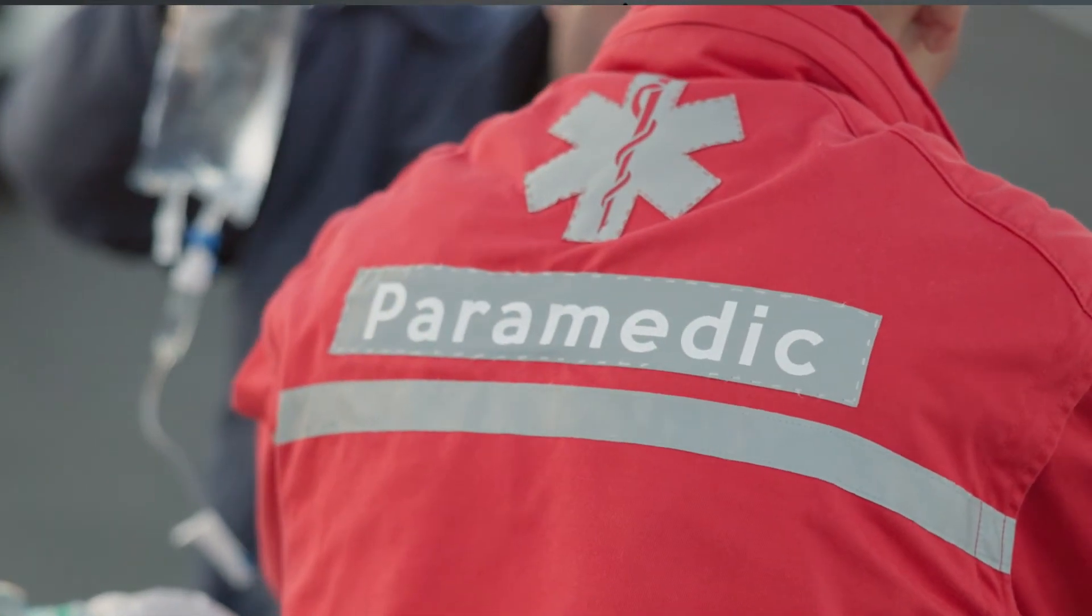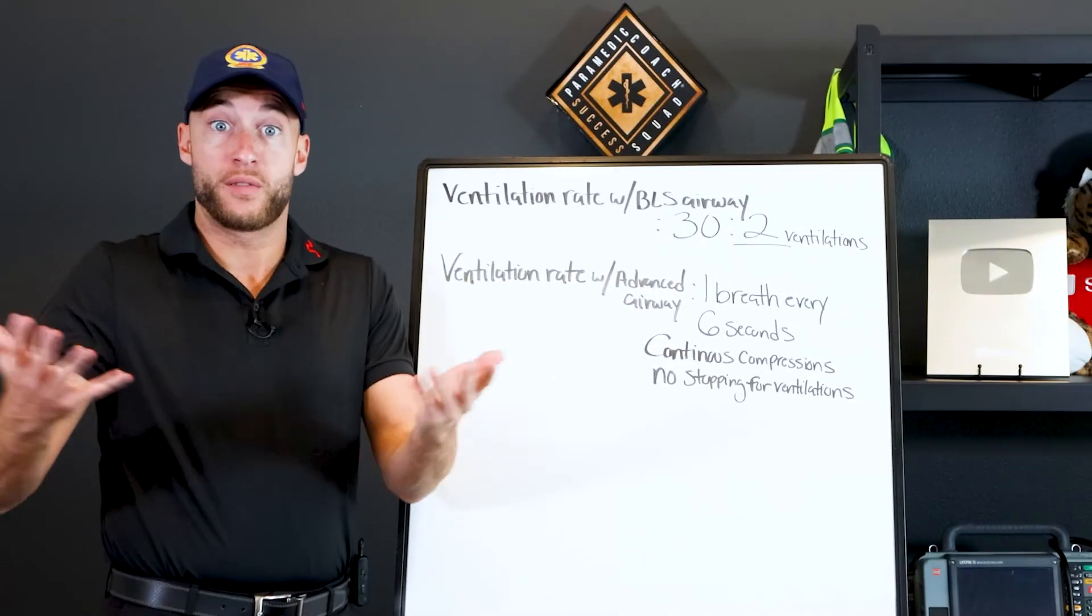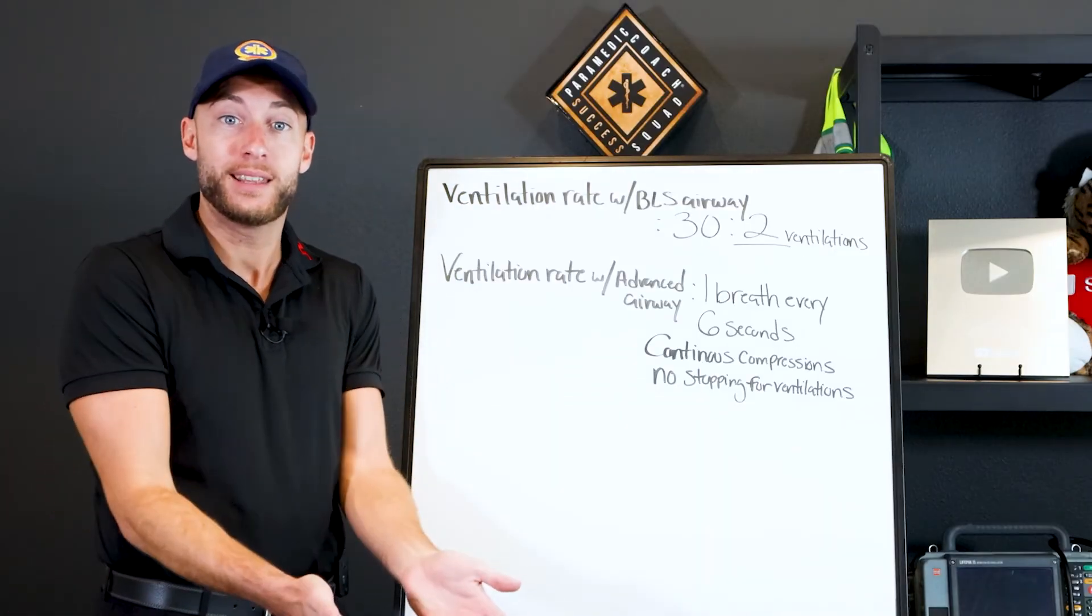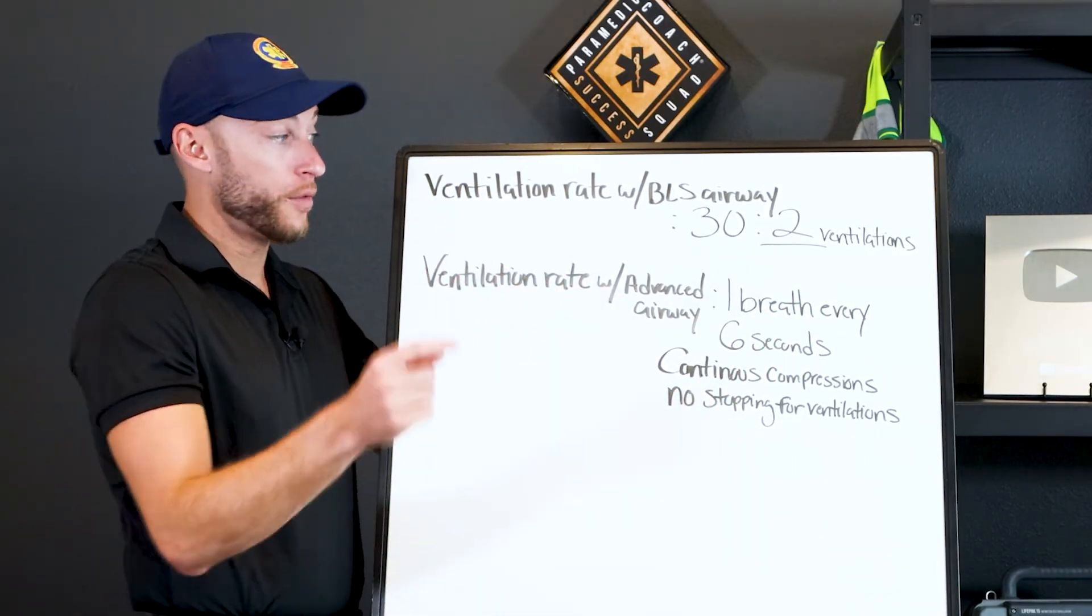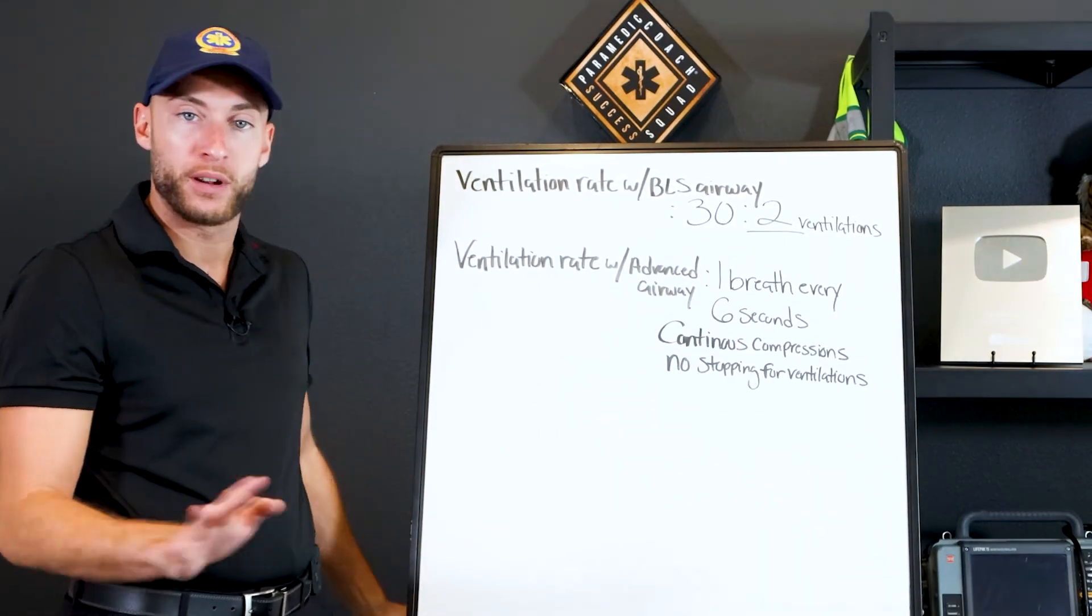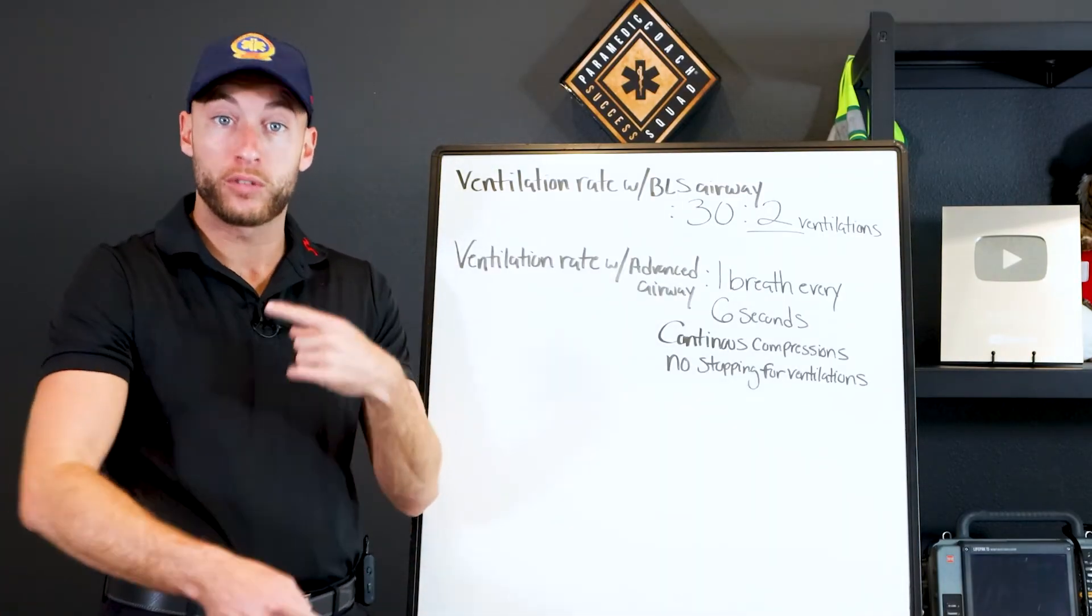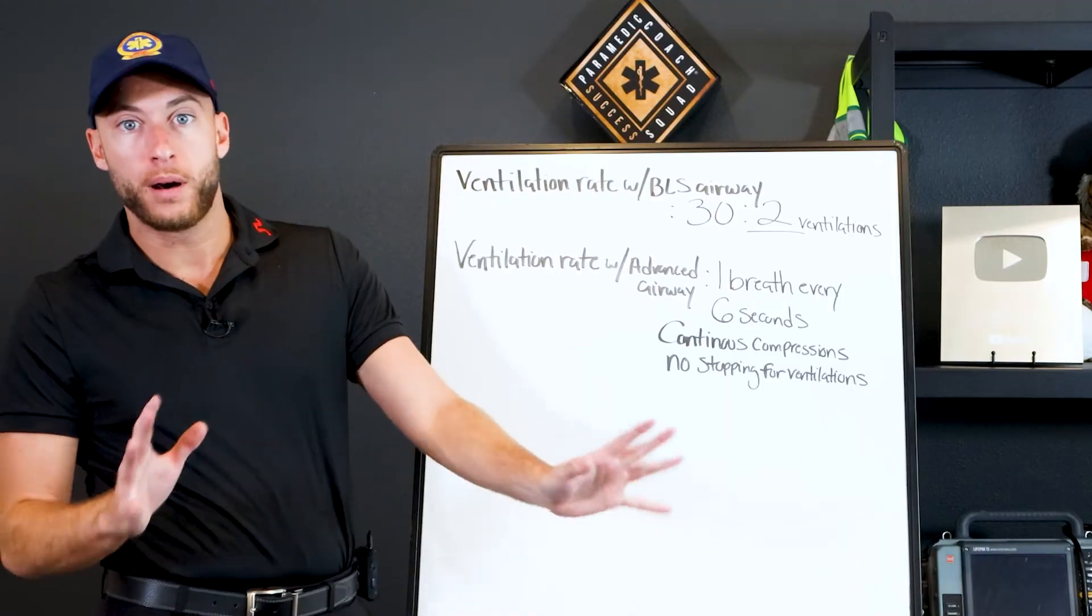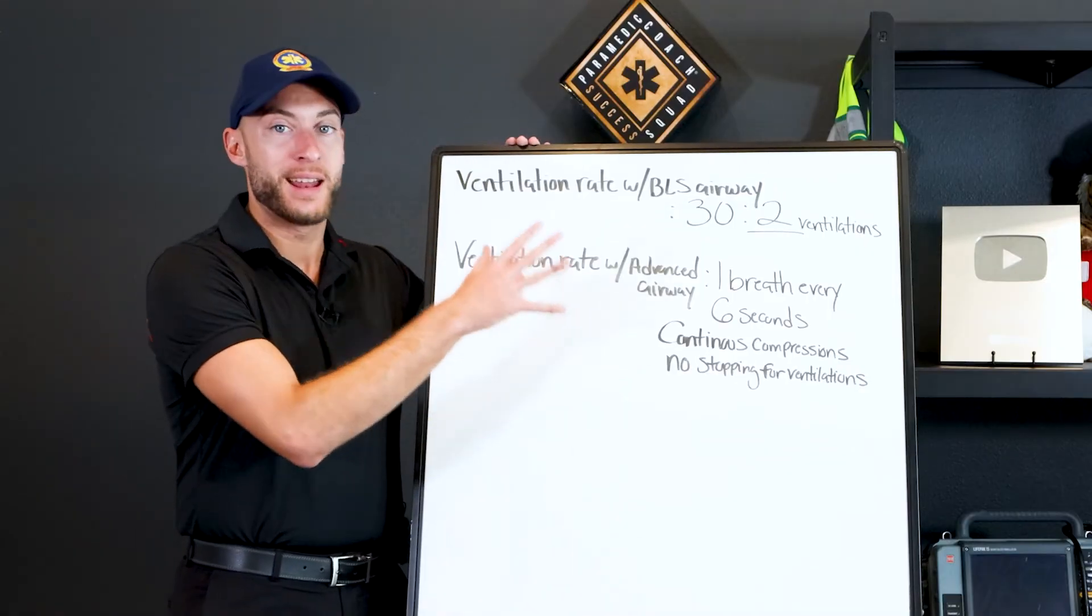What happens, the paramedic arrives on scene, intubates the patient or uses any of the following: an iGel, an LMA, a King LT, some sort of advanced airway on scene. What happens is we now move to one breath every six seconds for the adult patient. And we're going to provide continuous compressions where there's no stopping for ventilations. We're just going to continue and we're going to do 100 to 120 compressions continuously per minute. And at this point the paramedic takes over while looking at the monitor and kind of now leads the call. That's how it works when a paramedic gets on scene and is involved.